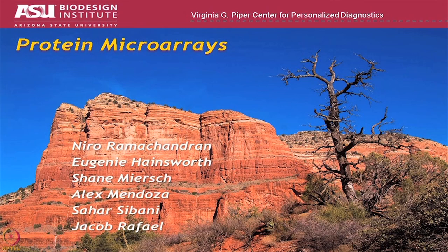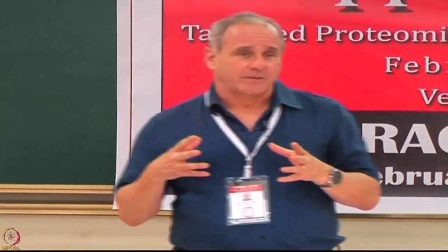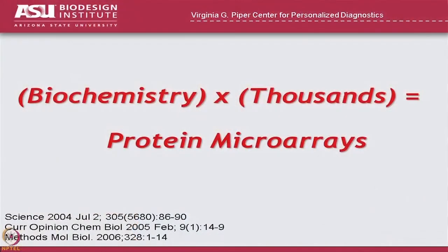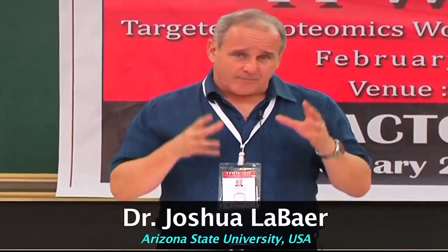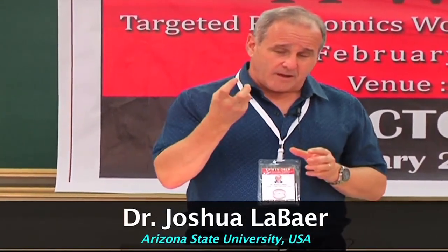We talked earlier about how having a library of expression clones would allow you to do all kinds of different studies. One we got very interested in is biochemistry. If you want to study the biochemistry of a protein, you need to make that protein and do experiments, and if you want to do it times thousands, that led us to the idea of protein microarrays. When we first began this work, we started by trying to do high-throughput protein purification — developing methods to make proteins in bacteria, lyse bacteria, capture the proteins on columns, elute them, and study them in high throughput.